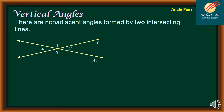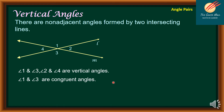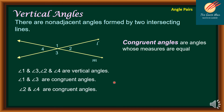Let's move on to vertical angles. These are the non-adjacent angles formed by two intersecting lines. Considering lines L and N, whenever we have two intersecting lines, four angles are formed. Angles 1 and 3, as well as angles 2 and 4, are vertical angles — like a mirror to each other. Angle 1 and angle 3 are congruent, and angle 2 and angle 4 are congruent. Congruent angles are angles whose measures are equal. So if the measure of angle 2 is 50 degrees, then angle 4 is also 50 degrees. Vertical angles are congruent angles.